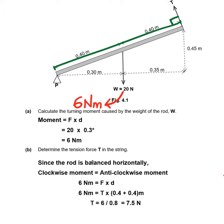Part B now wants you to find the tension force in the string. The question mentions that the rod is held in this manner, so it is actually balanced. When it is balanced, the clockwise moment and the anticlockwise moment will be the same value.